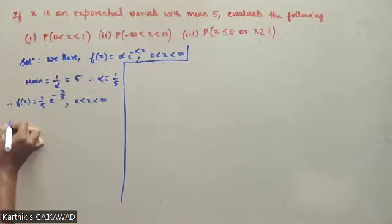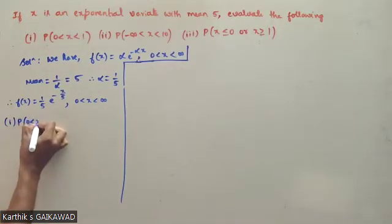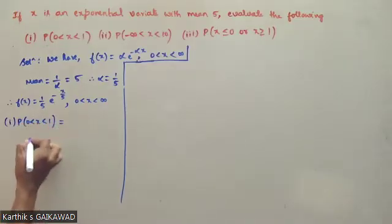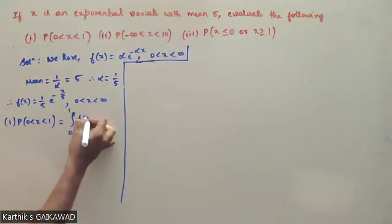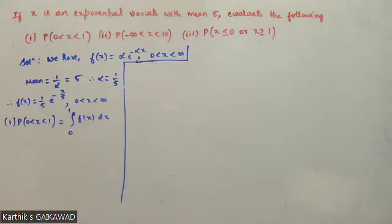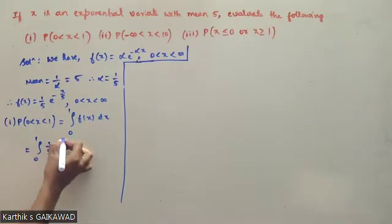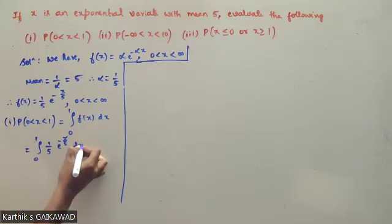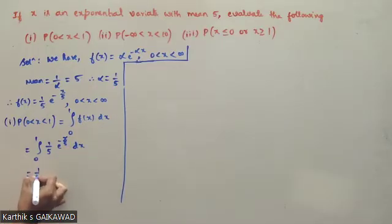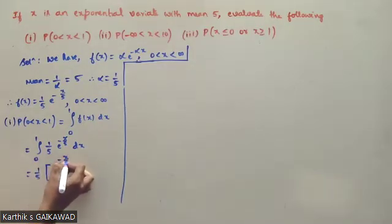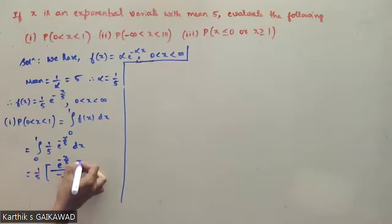First question: P(0 to 1) equals the integral from 0 to 1 of f(x) dx, which is the integral from 0 to 1 of (1/5) e to the power minus x by 5 dx. Integrating gives (1/5) times e to the power minus x by 5 divided by minus 1 by 5, with limits 0 to 1.